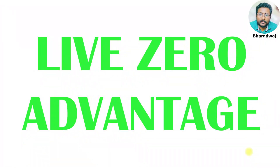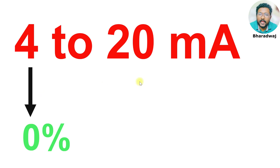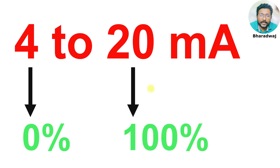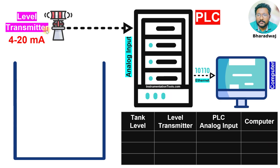In this video I will discuss the live zero advantage, which is the solution to the dead zero problem. I will consider 4 to 20 mA as a range. We already know 4 represents 0% of the scale and 20 represents 100% of the scale. Now I will go to the same example and consider a level transmitter range of 4 to 20 mA.